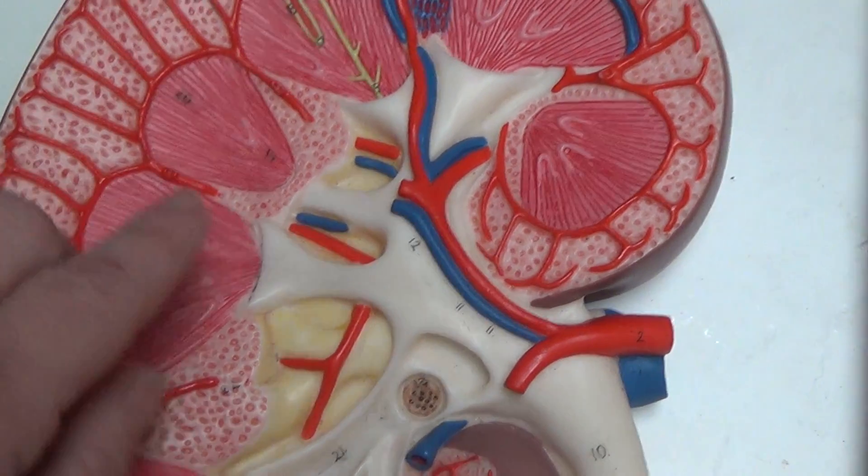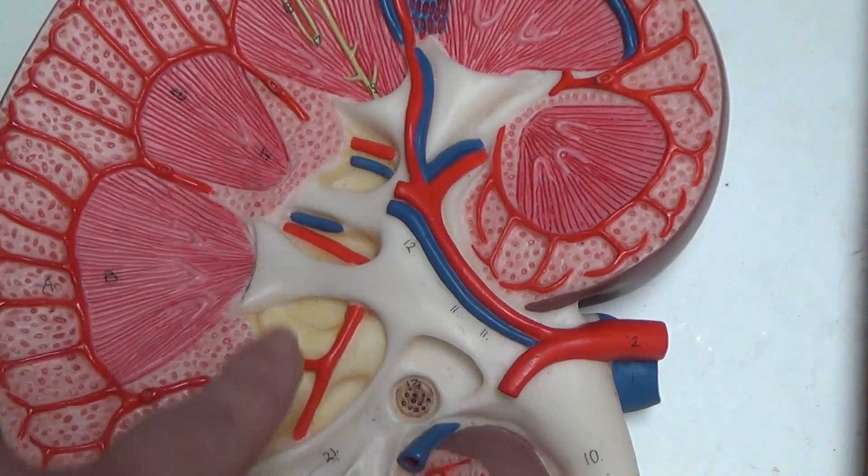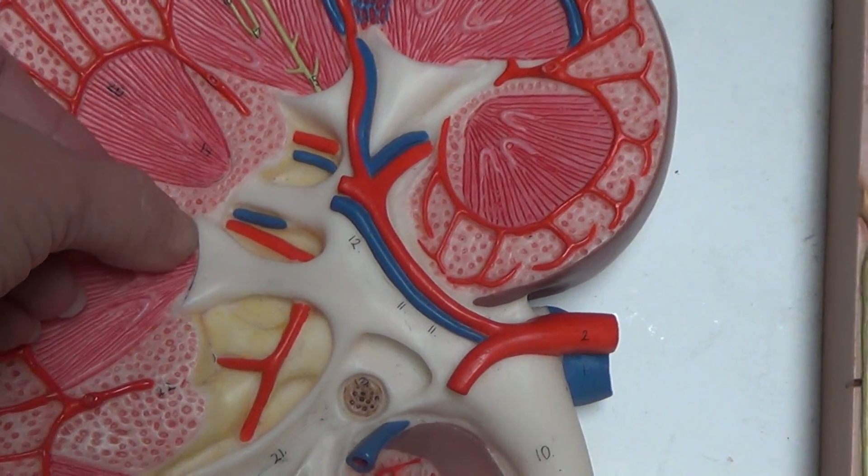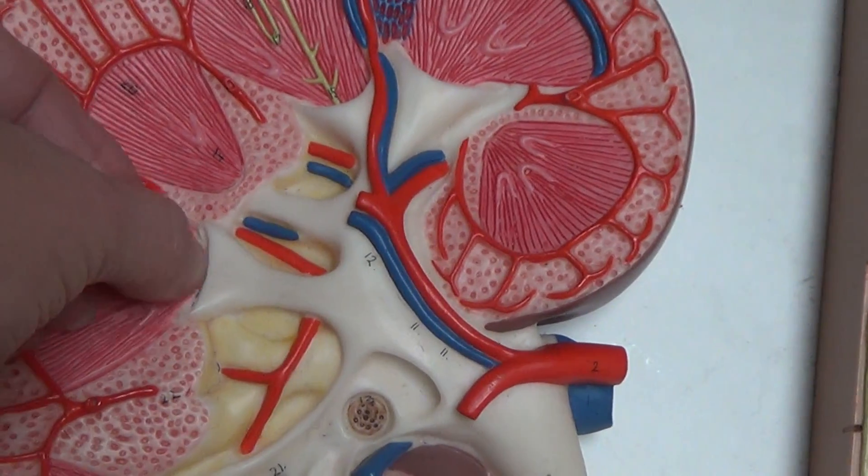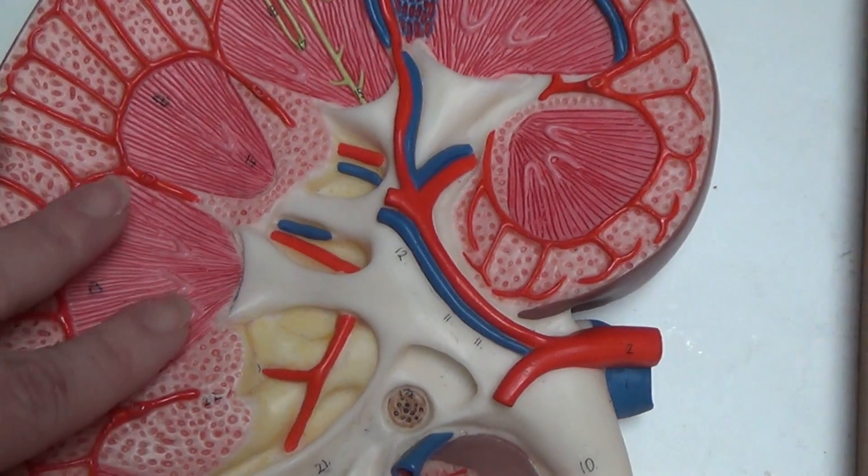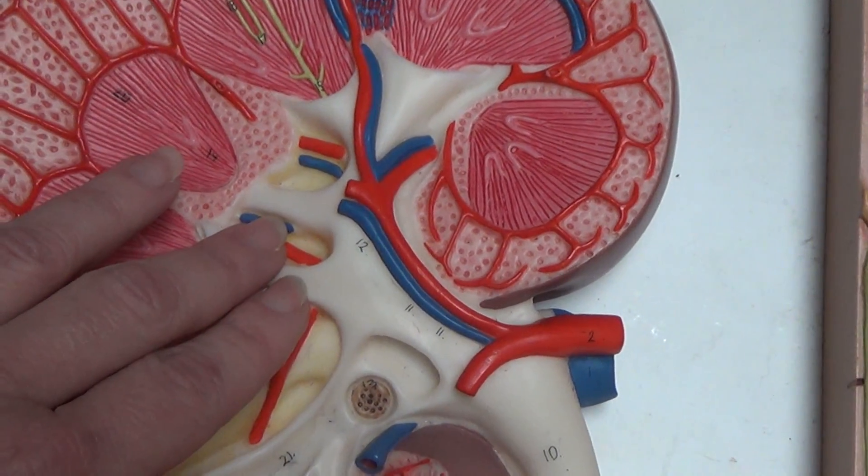And then they deliver it to this yellow area here which is called the renal pelvis. Now the renal papillae is this area right here or right here. It is the junction between the pyramid and the pelvis, the renal pelvis.